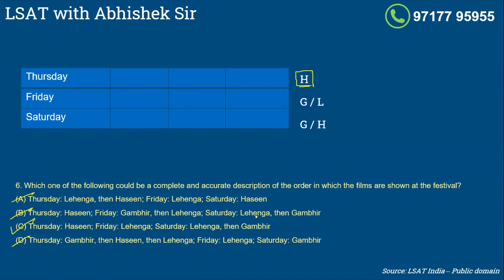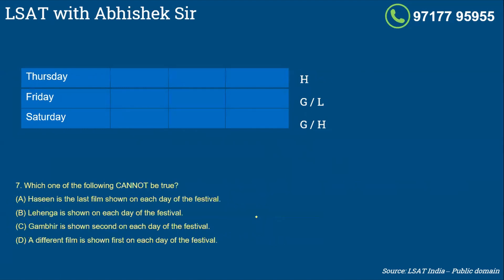So this is the best way to solve it - use one condition, apply it to all the choices. Let's come to the next question: which one of the following cannot be true? Haseen is the last film shown on each day of the festival. We know this cannot be true because on Friday it has to be either Gambhir or Lehenga. This is the beauty of making a table or diagram because now I don't have to read the clues again and again. So the answer to question seven is A.